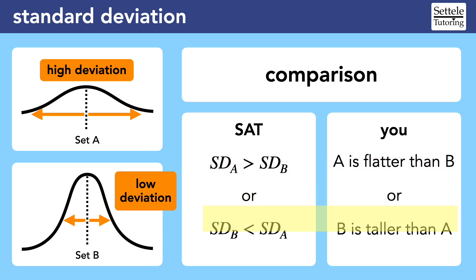We can flip this wording to say that the standard deviation of set B is less than the standard deviation of set A. We know that because, to us, set B is taller than set A. Try to remember that tall data sets have low deviation, and flat data sets have high deviation. This is counterintuitive for some people, because they want to say that something tall is greater than something short, but this is the exact trap that the SAT hopes you fall into.